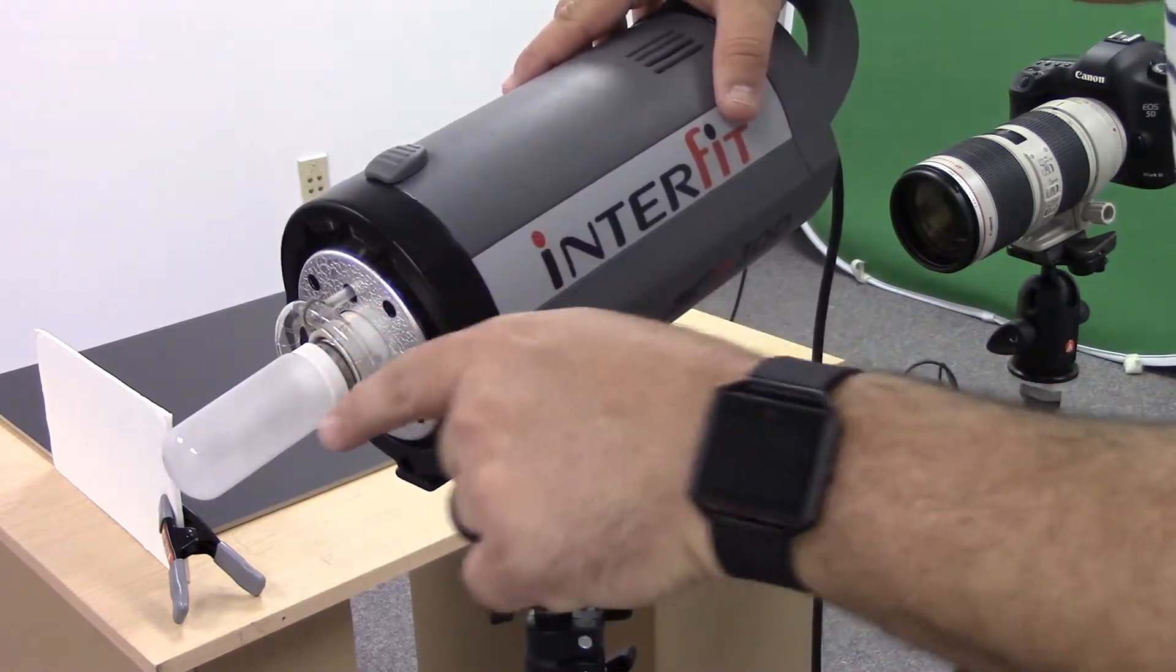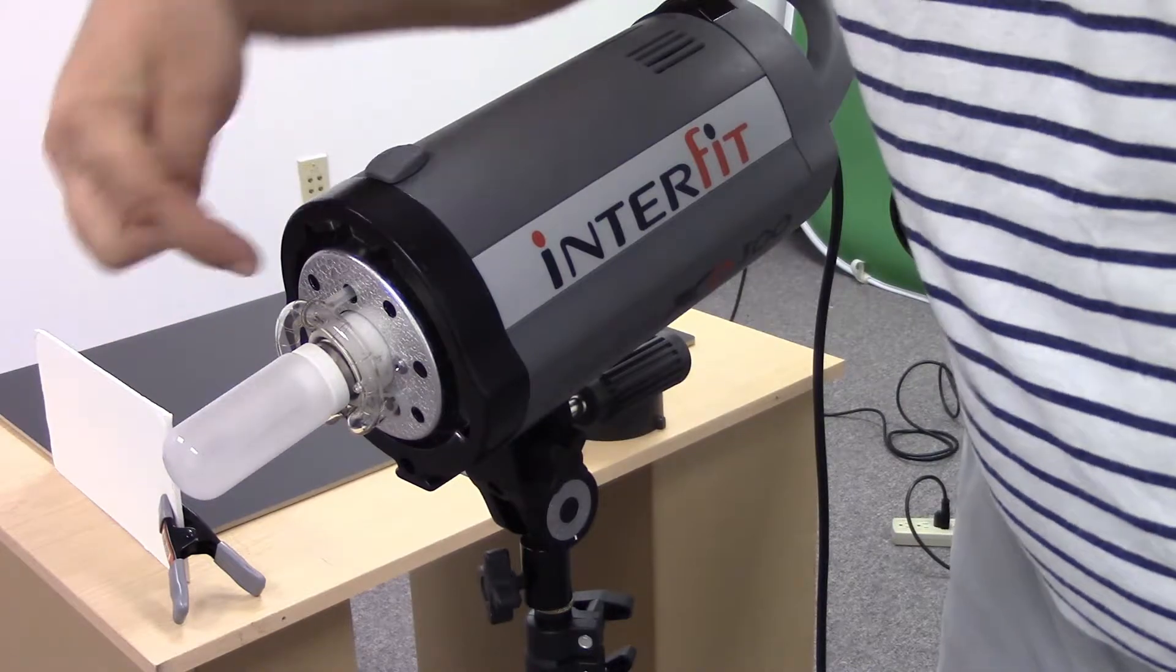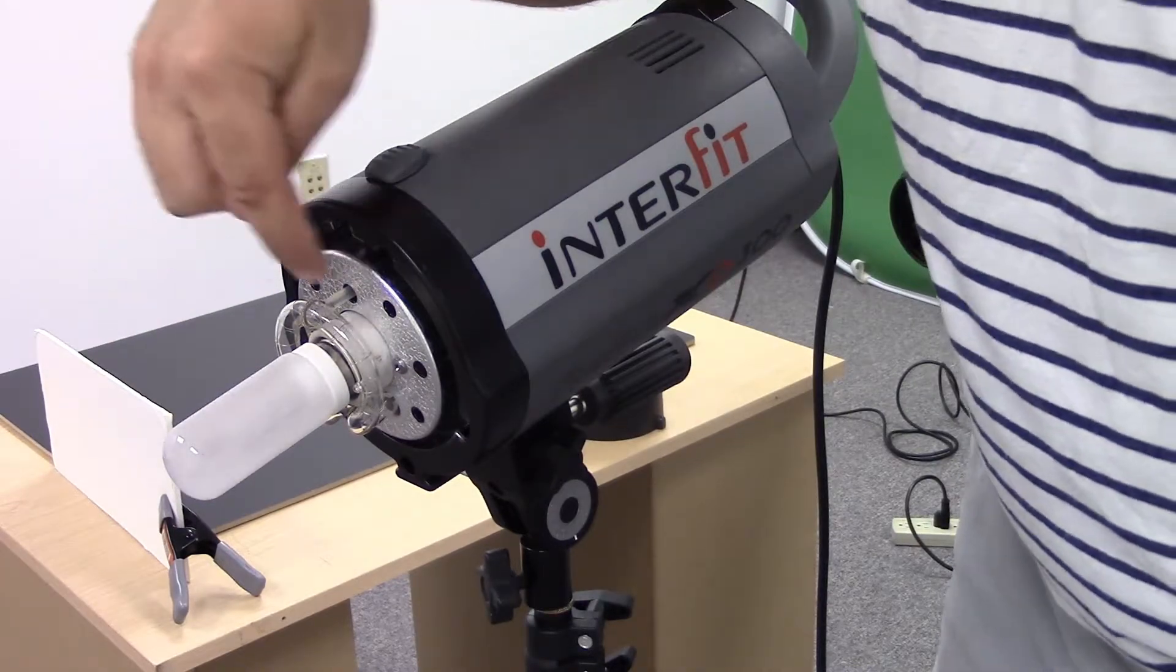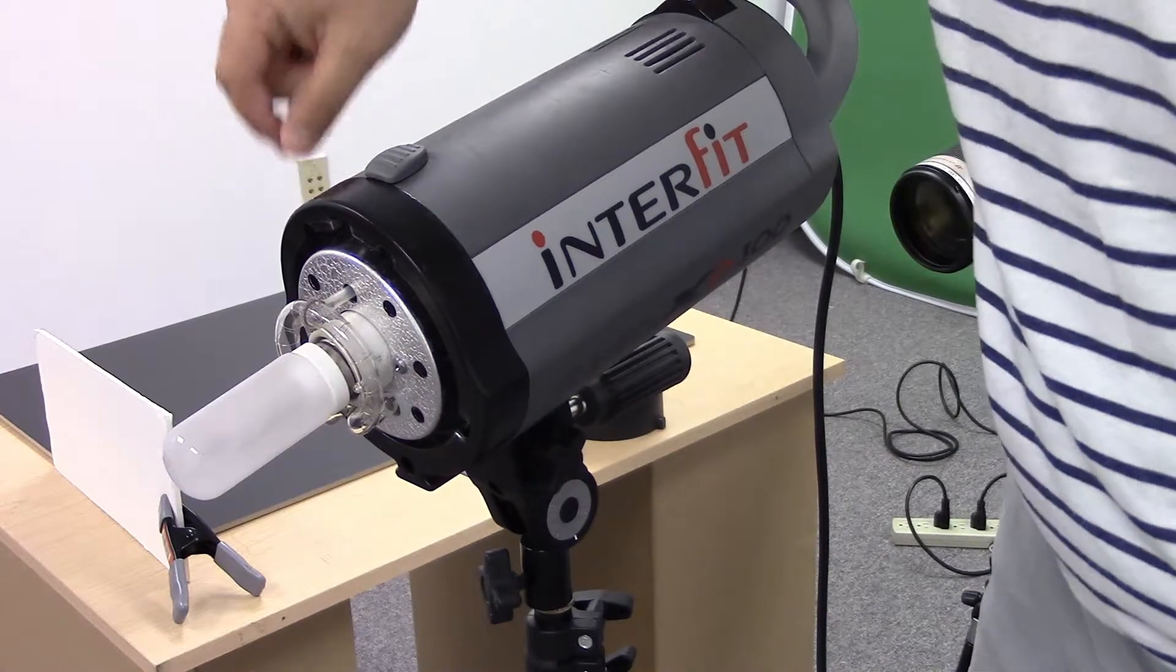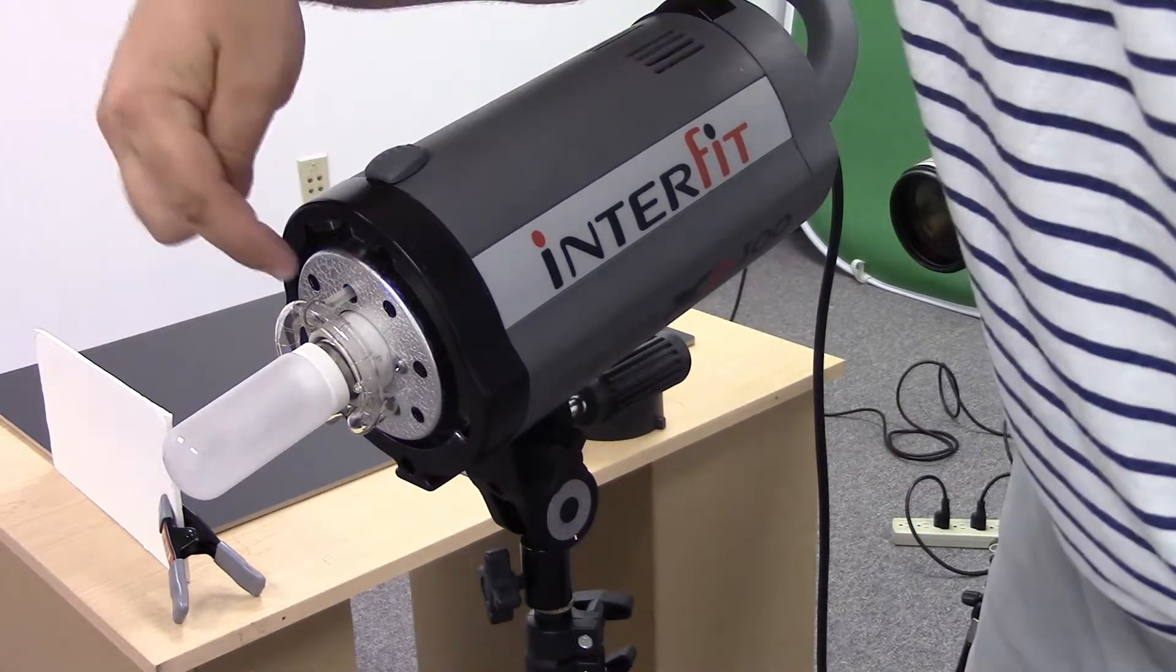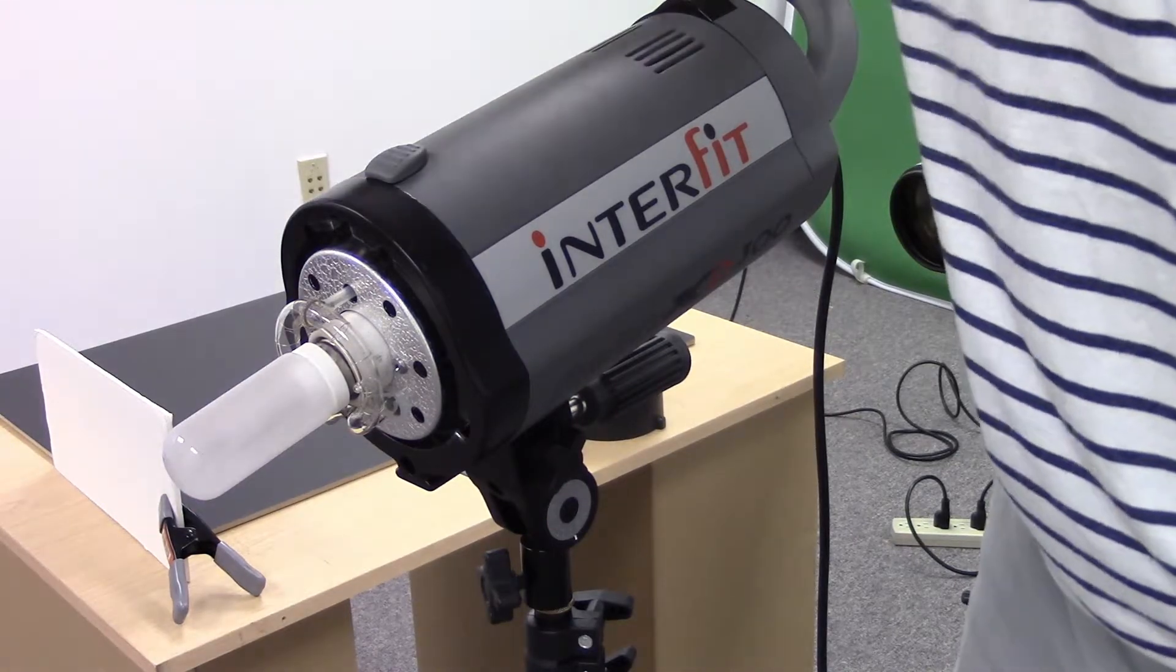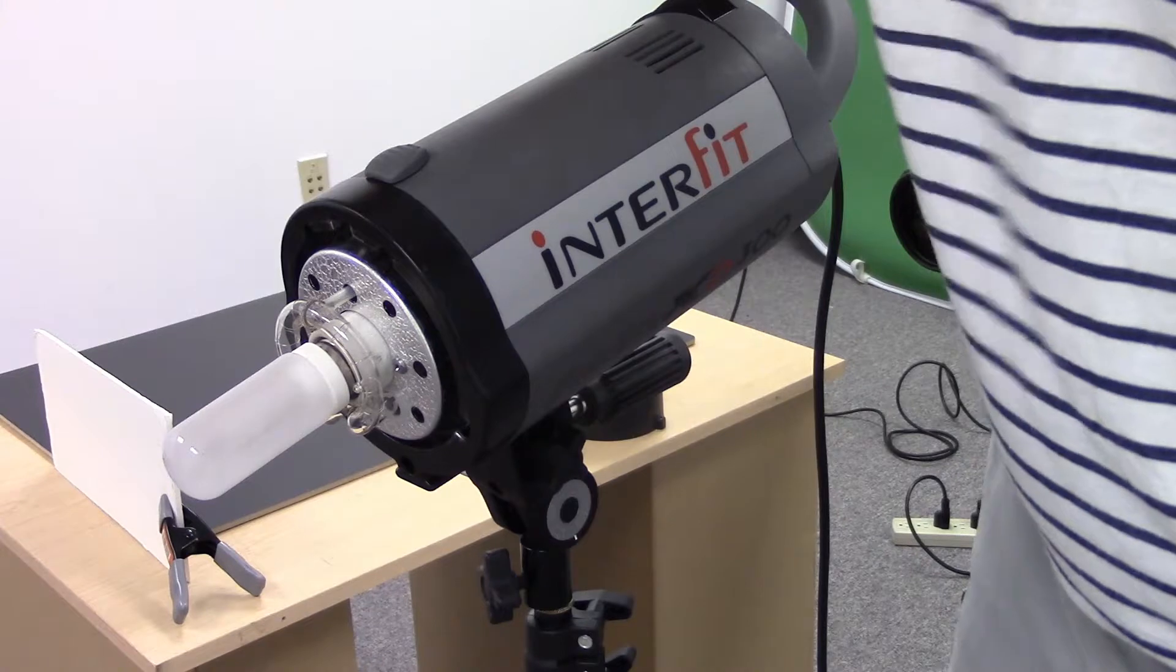So that light is important when you're setting up for your shoot. This strobe tube right here, this is the light that's actually going to pop to basically give you your light for your shot. This bulb does not stay on. This bulb only goes off when you trigger it and that's what gives you the light.